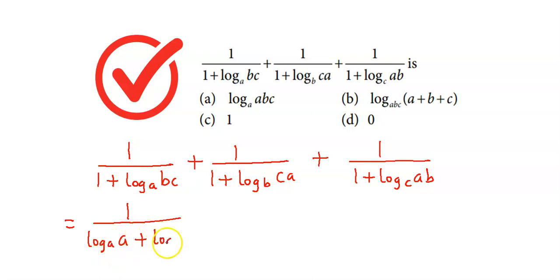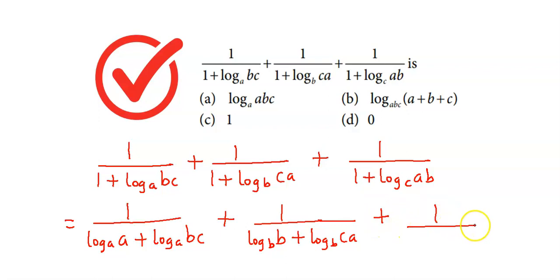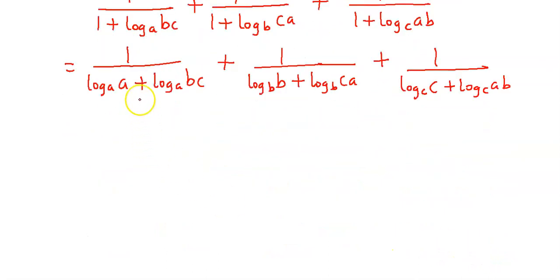यहाँ पर जो log term है इसका base है B, तो यह जो 1 है इसे हम replace करेंगे by log of B to the base B, plus log CA to the base B. वैसे ही तीसरे term में 1 को हम replace करेंगे by log C to the base C, और यह वाला term as it is plus log of AB to the base C. अब हम easily log terms को combine कर सकते हैं denominator वाले।